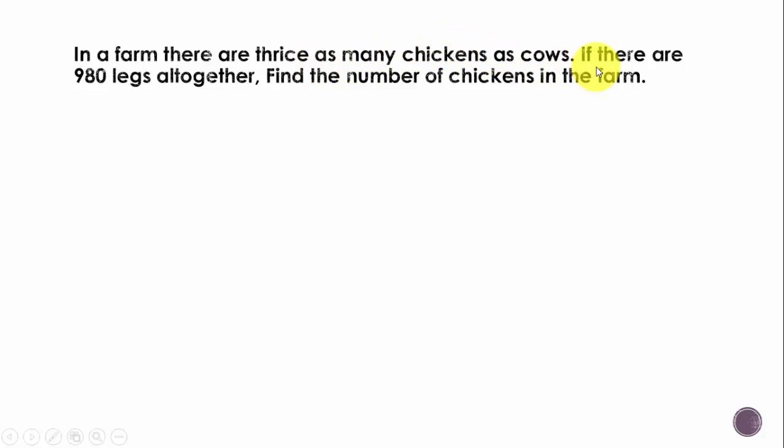Let's look at the problem: In a farm there are thrice as many chickens as cows. If there are 980 legs altogether, find the number of chickens in the farm.